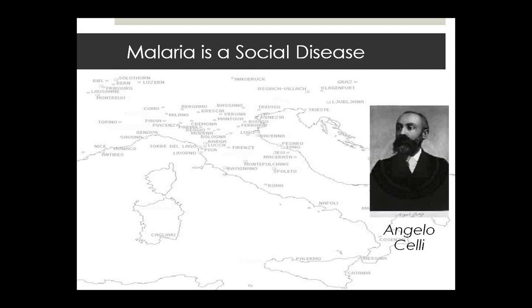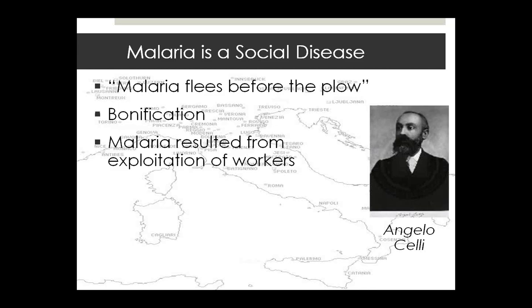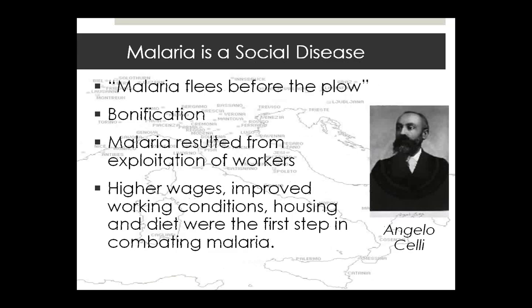Angelo Ceri, an Italian who worked on the quinine project, looked at the history of malaria in Europe and saw that malaria had disappeared as a result of social and economic development, particularly agricultural development. He argued that malaria flees before the plow, and proposed that to eliminate malaria you needed large-scale rural development and development of agriculture — known as bonification. He also pointed out that bad development could increase malaria, and argued that high wages, improved working conditions, housing, and diet were the first steps to combating malaria.